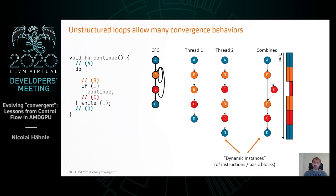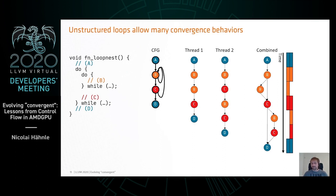For formal reasons it's always about instructions, though for pictures it's better to talk about basic blocks. Back to the loop question — we know how we want to combine those two threads for that loop. But consider a slight change where we have the same control flow graph, but it came from different high-level source where we had two nested loops, and that information got lost.